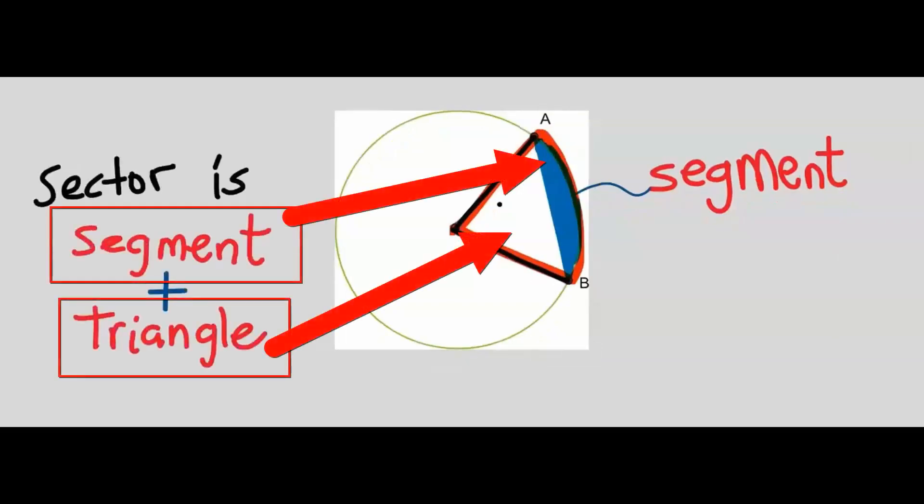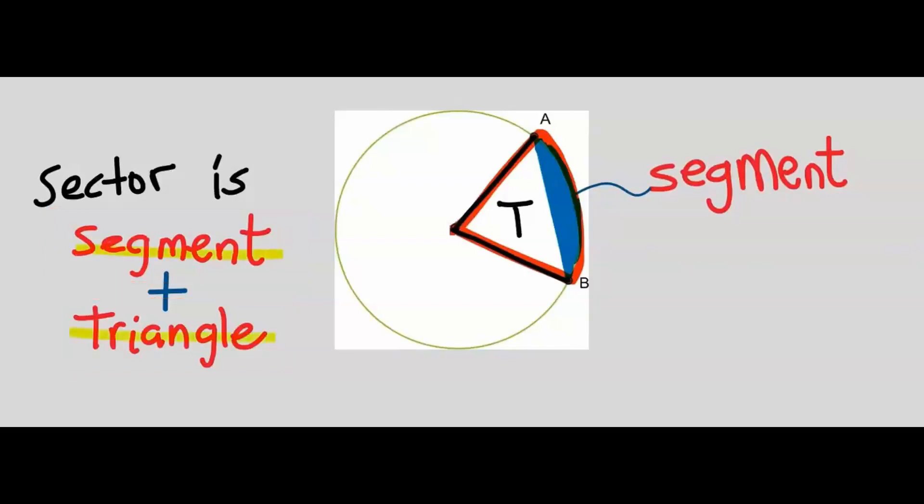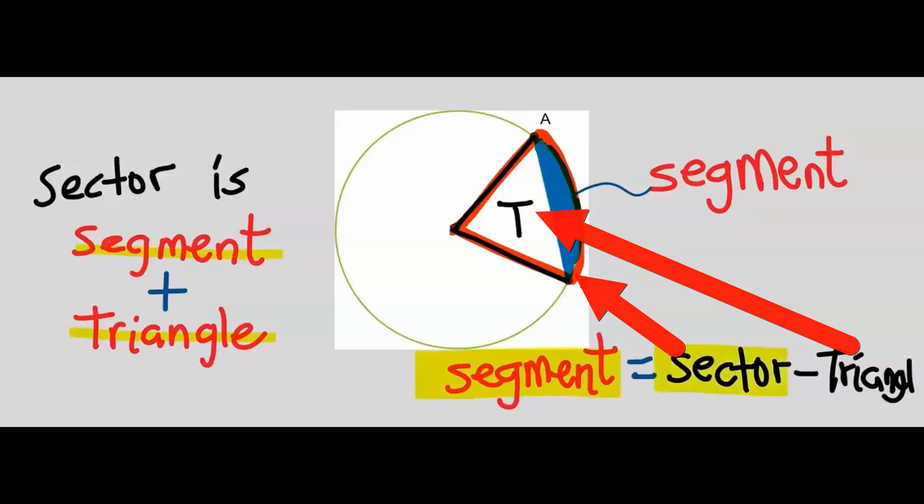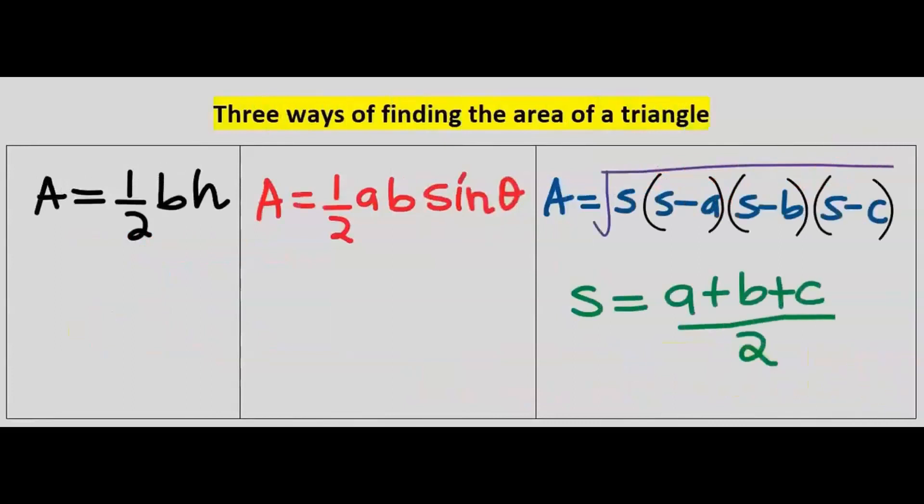Inside a sector is both a segment and a triangle. A segment is a sector minus the triangle, which is this portion. There are three ways of finding the area of a triangle.